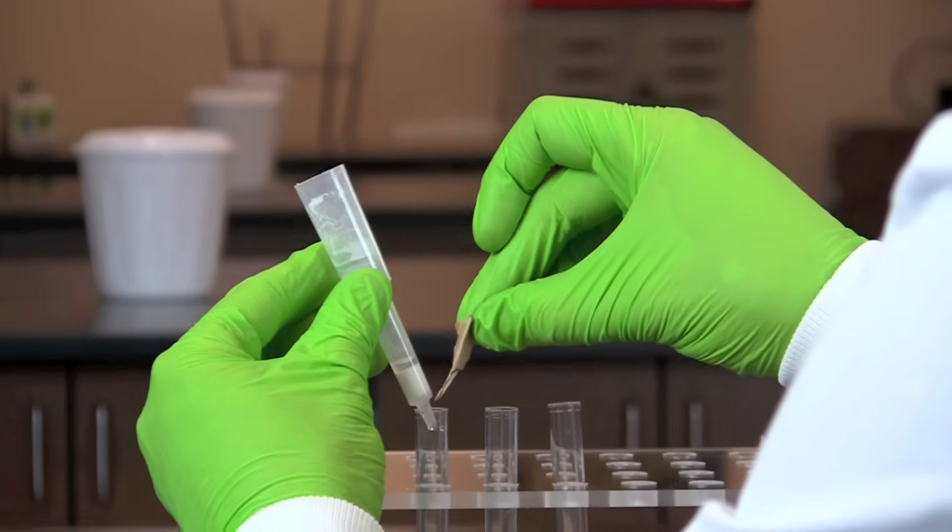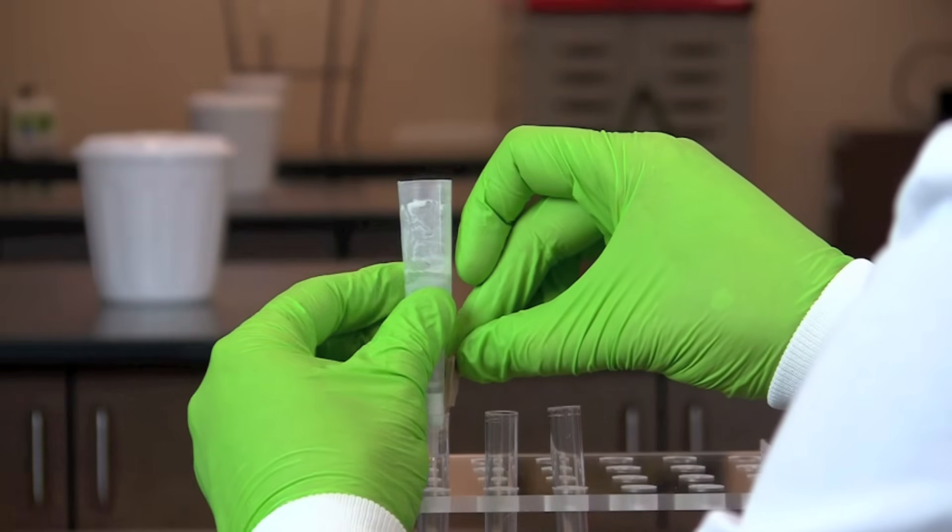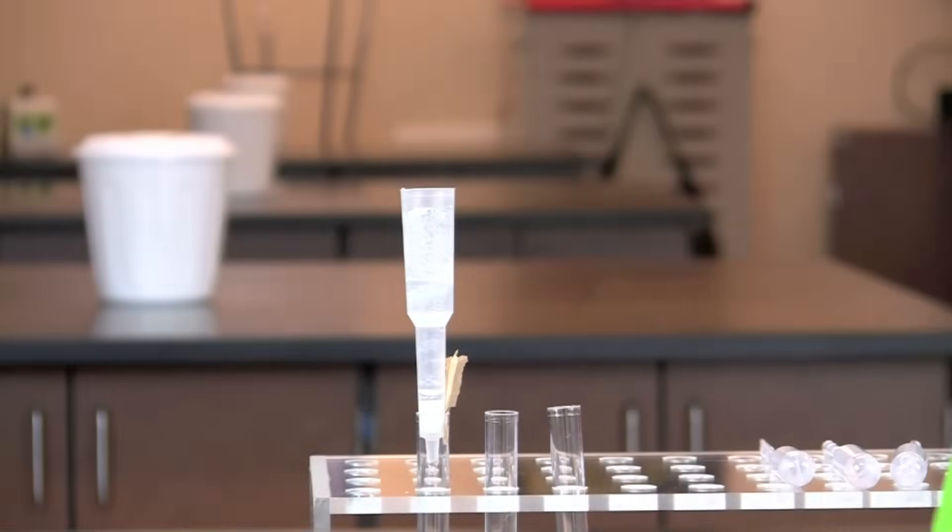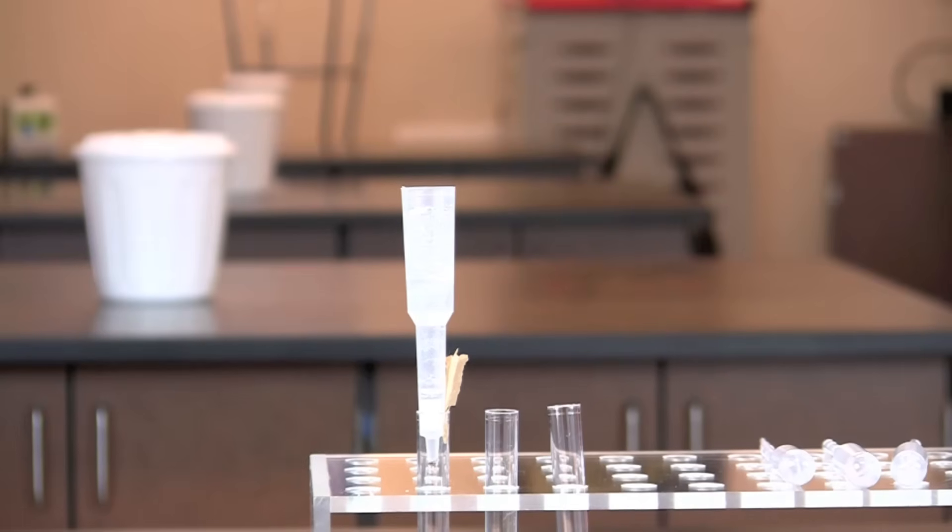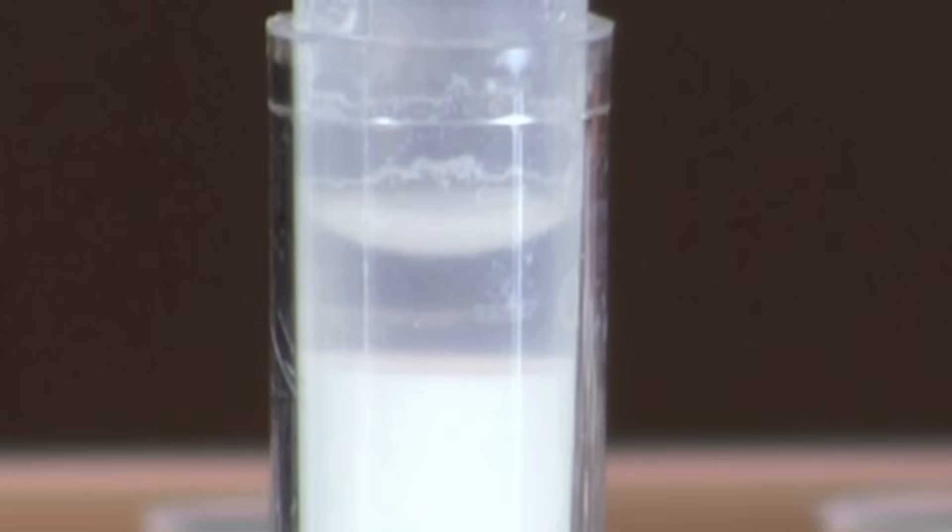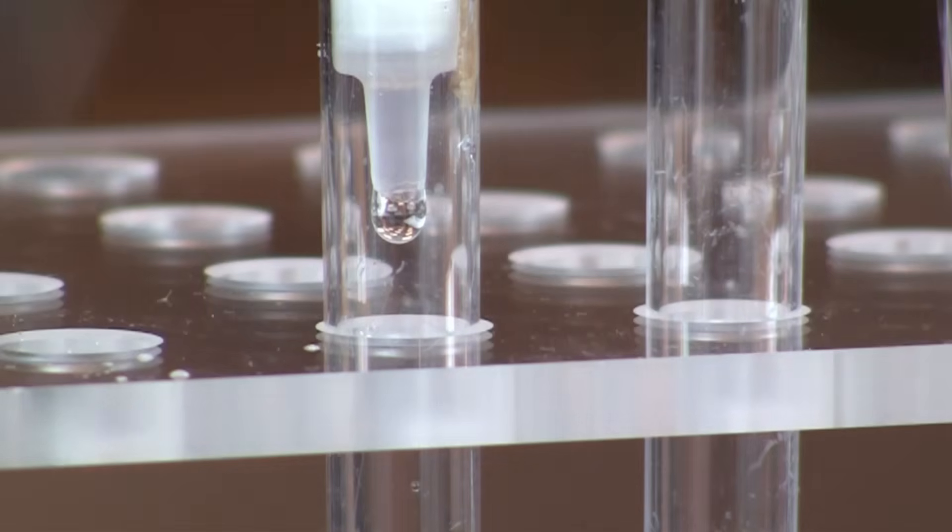Insert a small wedge of paper between the column and the collection tube to prevent the formation of an airtight seal, which would slow the flow of the sample through the column. Allow the column to drain the storage buffer in collection tube number one until the bottom of the meniscus is one to two millimeters from the surface of the resin.